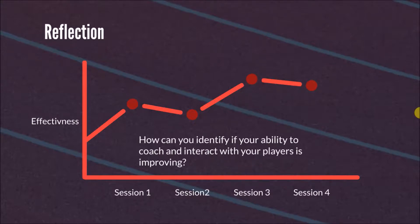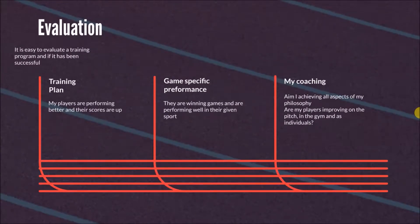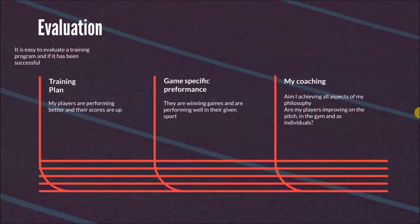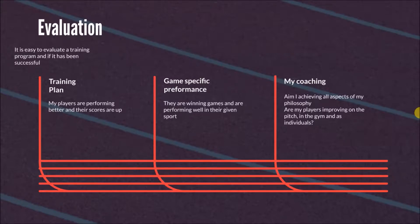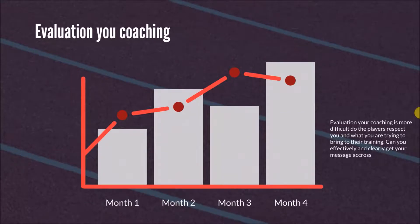How can you evaluate and identify if your coaching is effective from session to session? Evaluating a training plan or a game-specific performance is relatively easy. For a training plan, we can see performance markers going up — strength improving in the gym, the ability to express force. For game-specific performance, is the athlete winning? Is performance on the pitch improving? But how often can we identify if our coaching is improving, and if our players are buying into the philosophy we believe in?